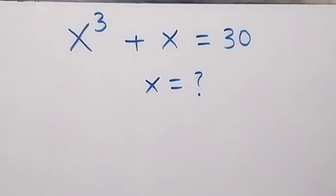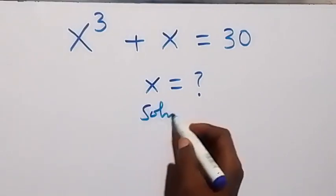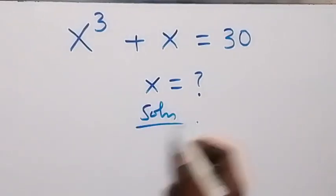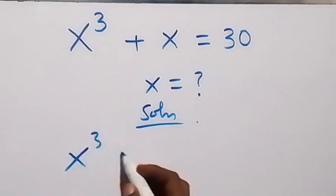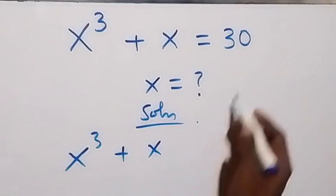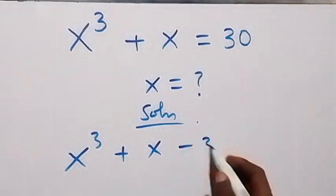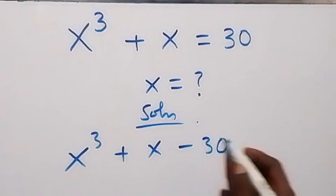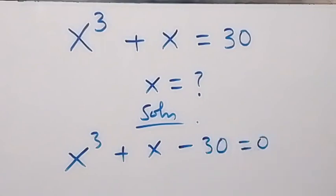Hello, you are welcome. How to solve this nice algebra problem. From here, we have x raised to the power 3 plus x. Then we can take 30 here and that becomes minus 30, now equals to 0.